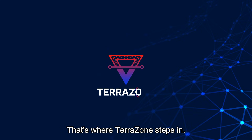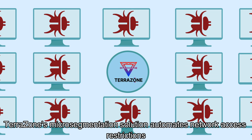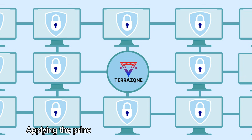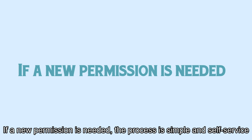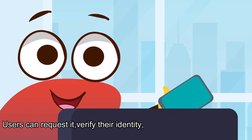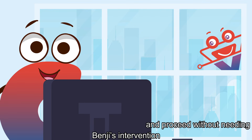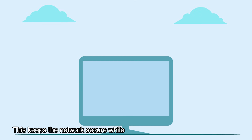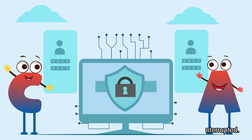That's where TerraZone steps in. TerraZone's micro-segmentation solution automates network access restrictions, applying the principle of least privilege across all assets. If a new permission is needed, the process is simple and self-service. Users can request it, verify their identity, and proceed without needing Benji's intervention. This keeps the network secure while allowing users to work uninterrupted.